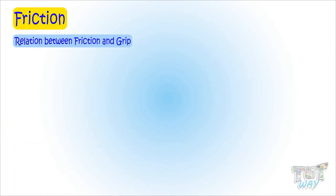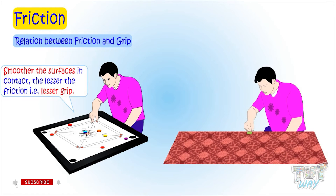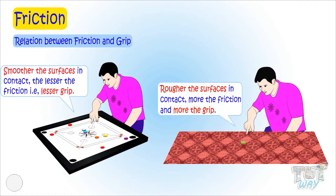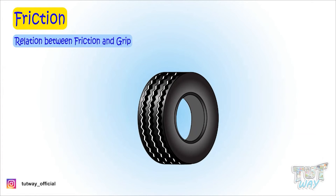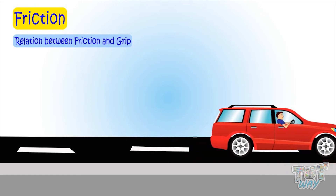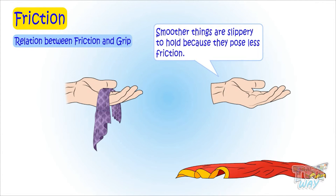Now let's see the relationship between friction and grip. The smoother the surfaces in contact, the lesser the friction — the surfaces will not stay in contact and will slip off, meaning there will be no grip. The rougher the surfaces in contact, the higher the friction or opposing force, meaning there will be more grip and the two objects will have better contact. This is why the surface of tires is made as rough as possible to have more grip on the road — otherwise the tires will skid or slip off the road. Smoother things are slippery to hold because they pose less friction.